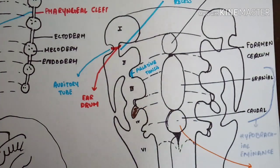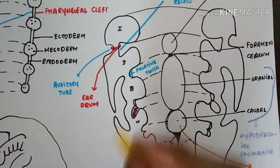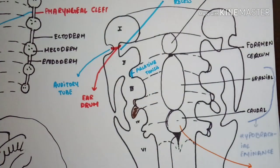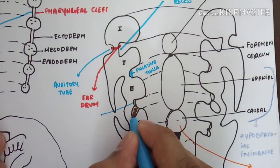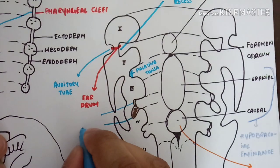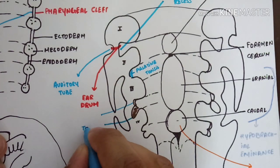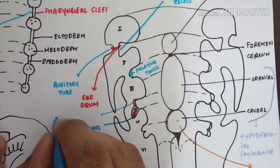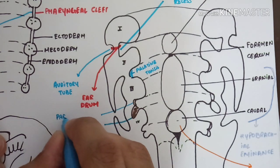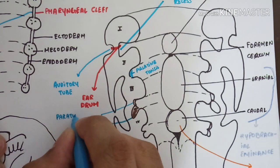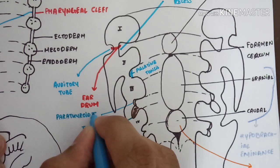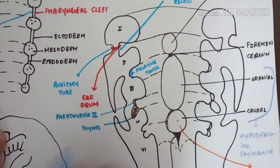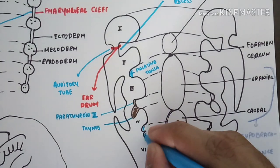The second pharyngeal pouch forms the palatine tonsil. The third pharyngeal pouch has a dorsal bulbar part and a ventral tubular part. The ventral tubular part, which is long, forms the thymus. The dorsal bulbar part forms parathyroid three — also called the inferior parathyroid — as it migrates downwards in the later stage.